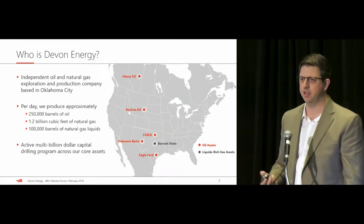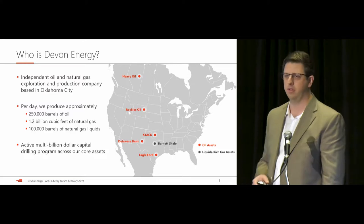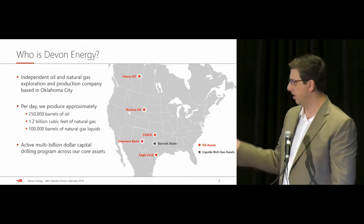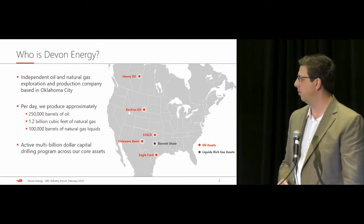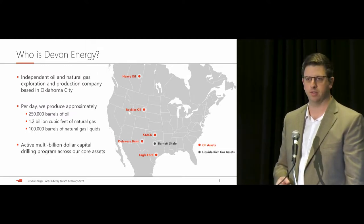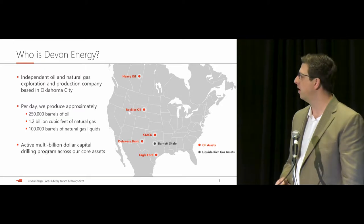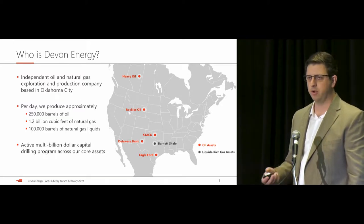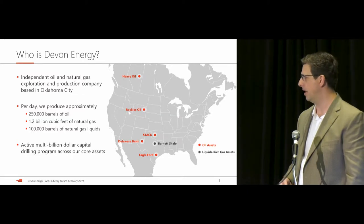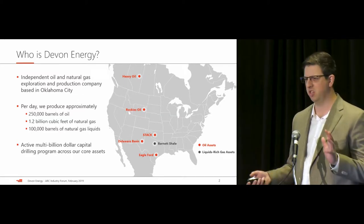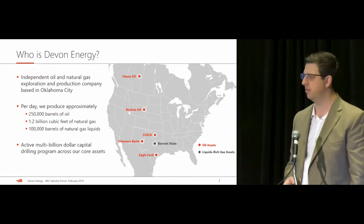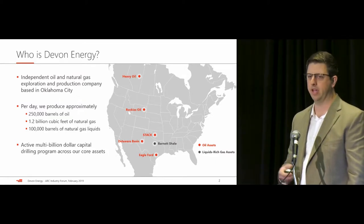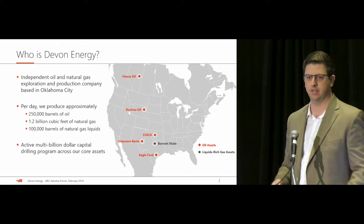So who is Devon Energy? We're an upstream independent oil and natural gas producer. We operate onshore North America and we account for about a quarter million barrels of oil produced per day. We have an active multi-billion dollar drilling program and we operate somewhere around 8,000 wells, plus or minus. Those wells are supported by hundreds and thousands of different assets and different pieces of equipment.